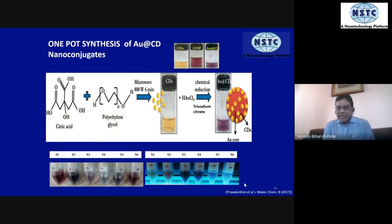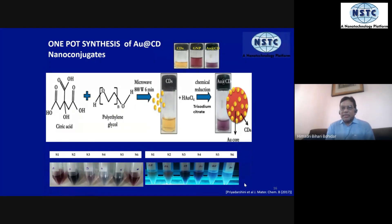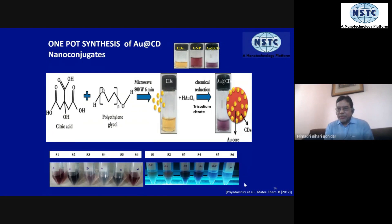Another signature of the formation of both carbon dots and the conjugate is looking at the sample under ultraviolet light. Both of them are fluorescent molecules, and the sample will look completely different under ultraviolet light — this confirms that your sample is indeed a carbon dot material.